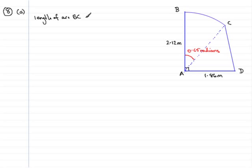Welcome back. Let's see how you got on. We start then by finding the length of the arc BC. The arc BC is basically a part of the circumference of the circle centre A.